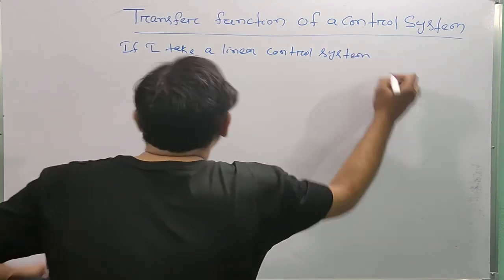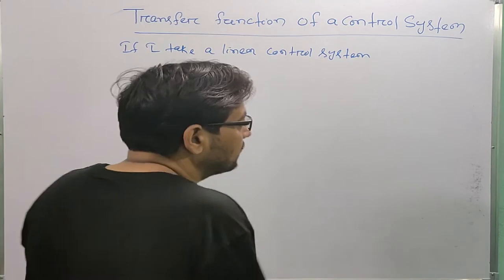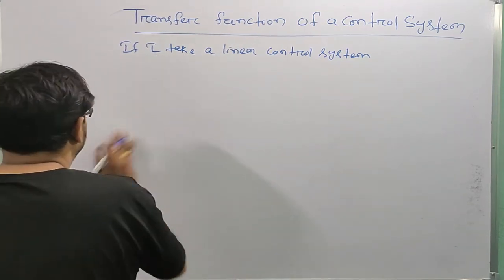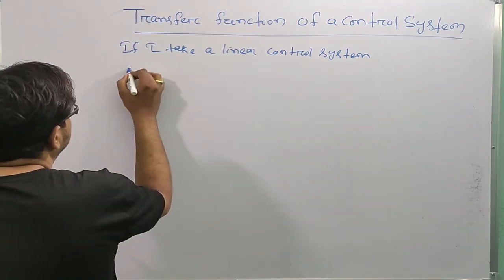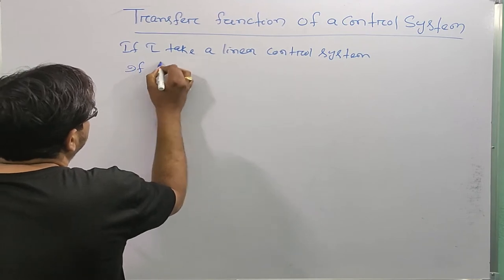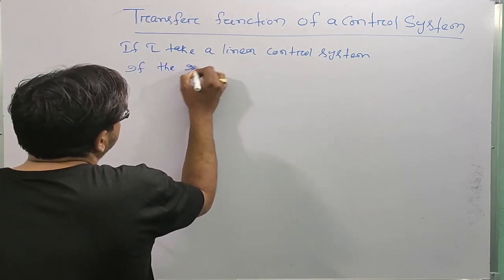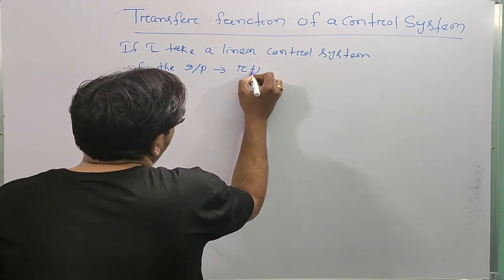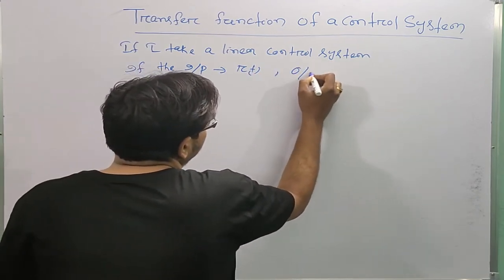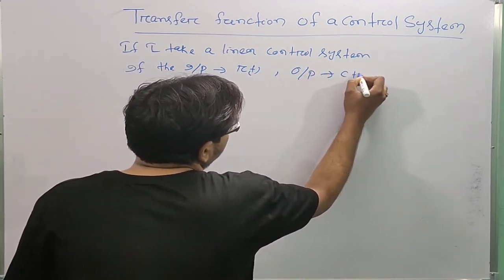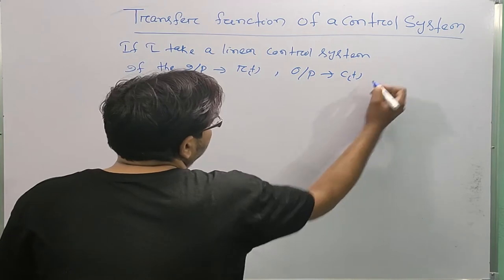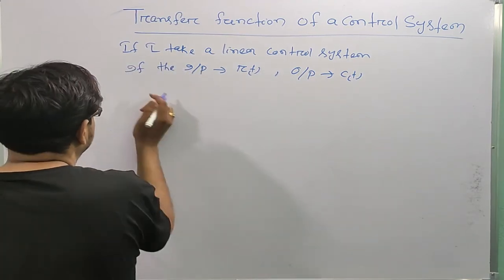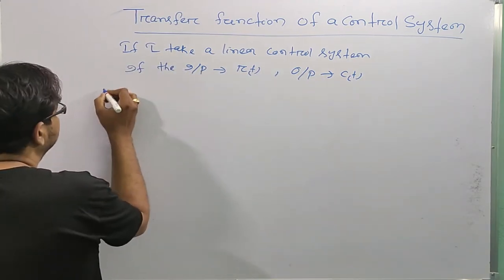Next: what is the transfer function of a linear control system? If I take a linear control system where the input is r(t) and the output is c(t), and the system is described by an nth order differential equation.